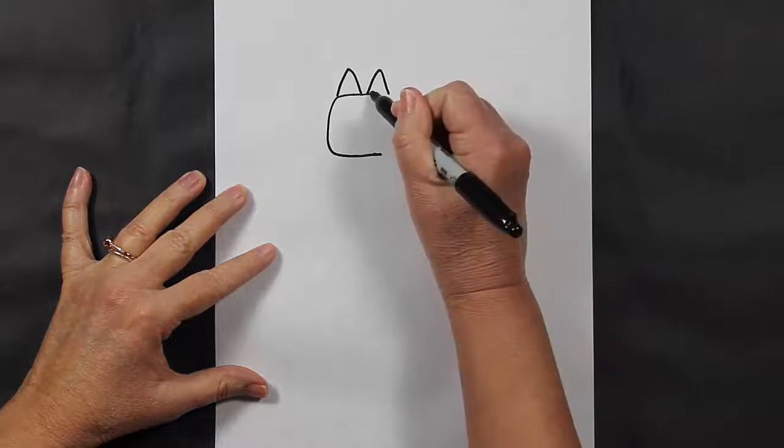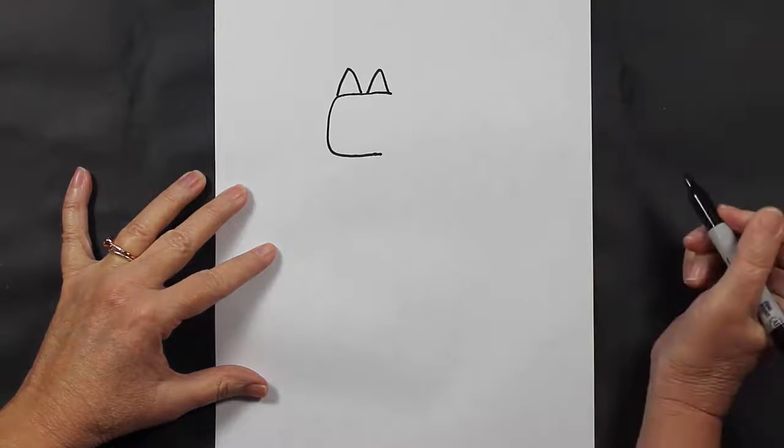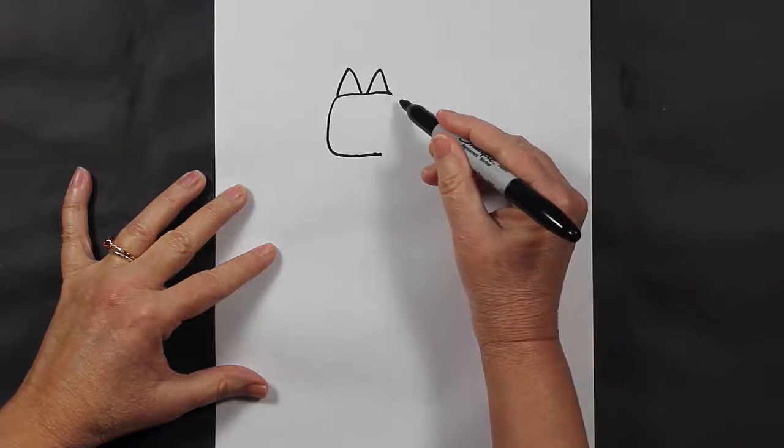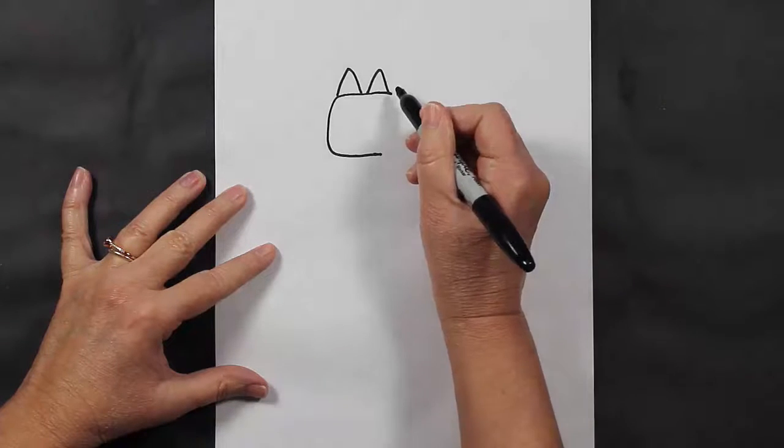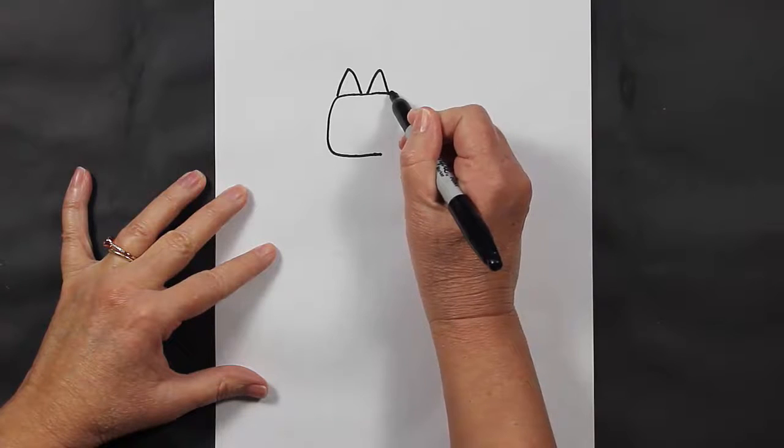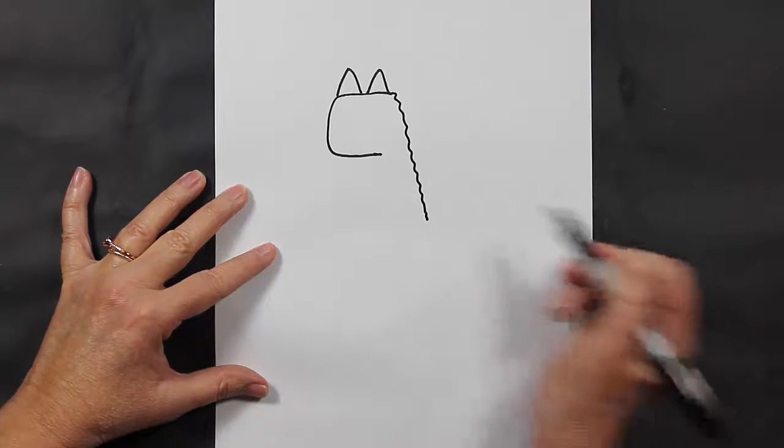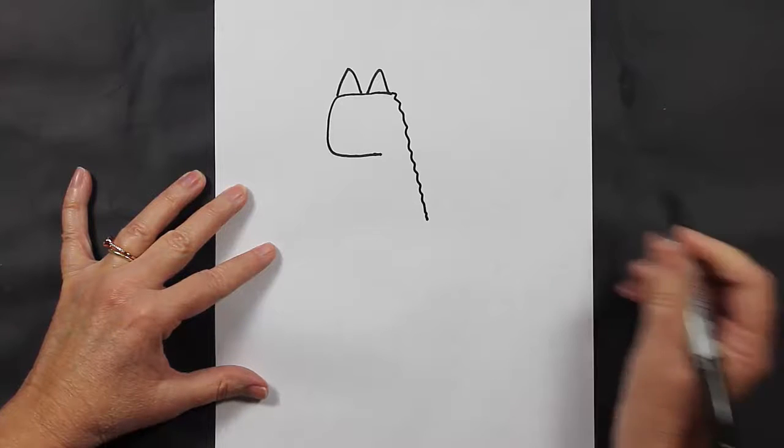I'm going to make this line a little bit longer. There we go. Now we are going to come down the back of our llama with a squiggly, slightly slanted line like this.